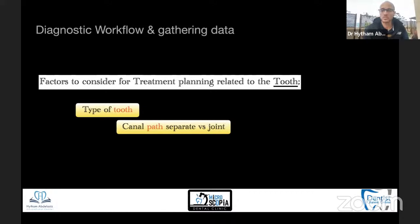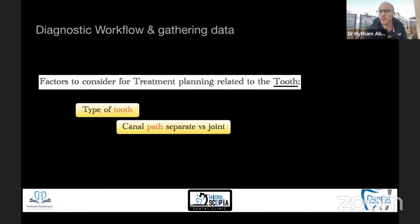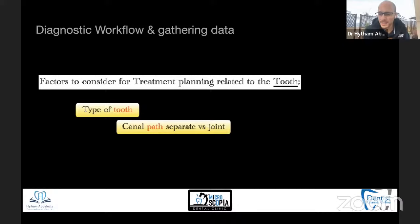The second thing to consider is the canal path itself — whether this canal joins another canal or is separate. Whenever we have a canal that joins another canal, there is actually no significance of trying to retrieve the instrument, because the objective of managing the separated instrument is to have accessibility to the apical part beyond it. Whenever you have a joined canal, never attempt retrieval — just go for regular bypassing. Even if this does not succeed, you can clean before the file and after the file.